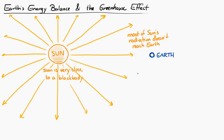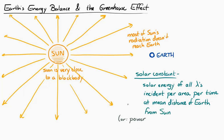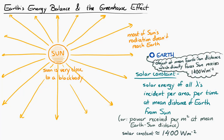So we define something called the solar constant, which is the solar energy of all wavelengths that's incident per area, per time, at the mean distance of the Earth from the Sun. Another way to say that is the solar constant is the amount of power received per square meter at the mean distance of the Earth from the Sun, and it's approximately equal to 1400 watts per square meter.